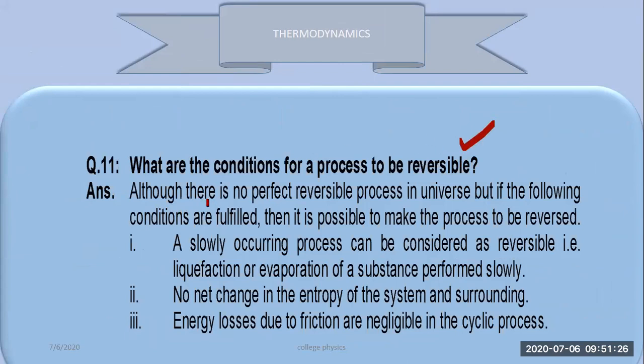Although there is no perfect reversible process in the universe, if the following conditions are fulfilled, then it is possible to make the process to be reversed. A slowly occurring process can be considered as a reversible process.